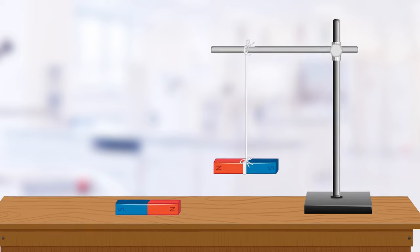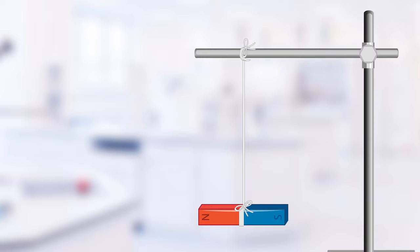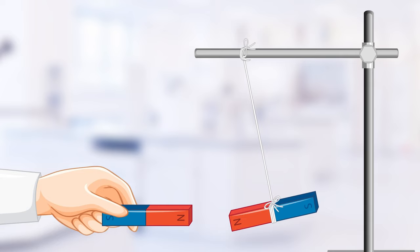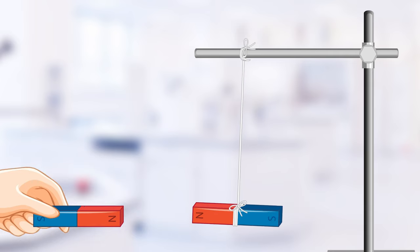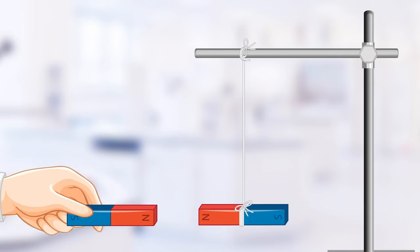Now let's observe what happens when the north pole of a bar magnet is brought closer to the north pole of the hanging magnet. Wow! The hanging magnet moves away! The north poles repel each other!